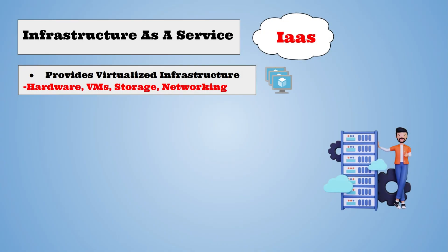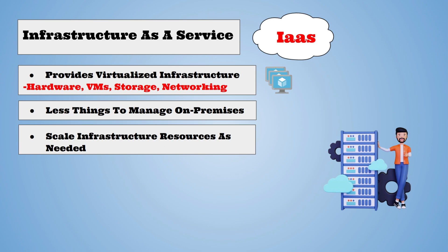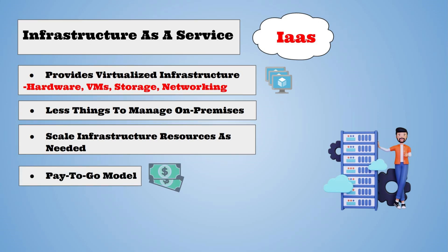The next cloud service model is Infrastructure as a Service. This service provides virtualized hardware, virtual machines, storage, and networking resources. Consumers are still responsible for deploying and maintaining the application and data. Infrastructure as a Service eliminates the need of buying physical hardware in a data center, as it provides on-demand scalability. Companies can scale their resources up or down depending on the workload, giving full control over their infrastructure. This service uses a pay-as-you-go model, meaning the company or user only pays for the resources they use.